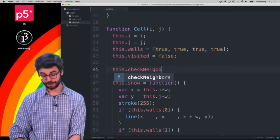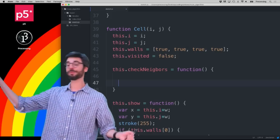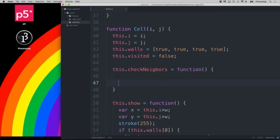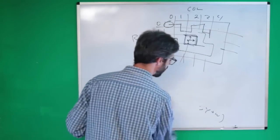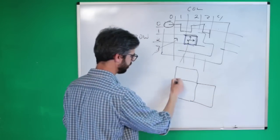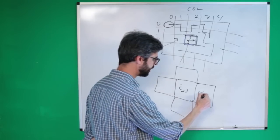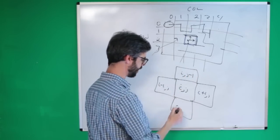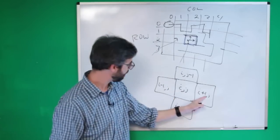How do I check the neighbors? Much like we discussed in the previous video about top, right, bottom, and left walls — if I have a cell at (i, j), the top neighbor is (i, j-1), the right neighbor is (i+1, j), the left is (i-1, j), and the bottom is (i, j+1). Y goes up or down by one, I goes up or down by one.